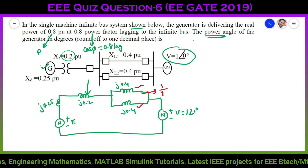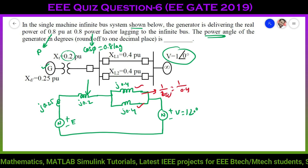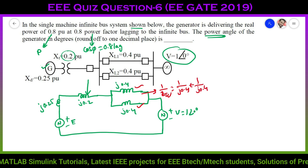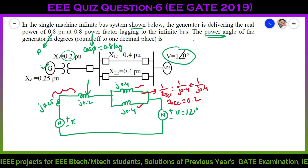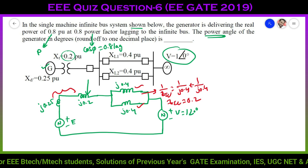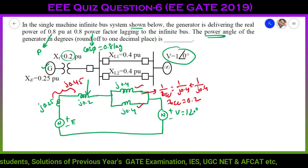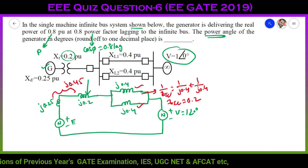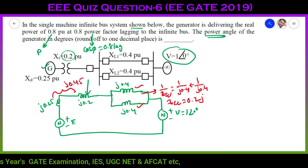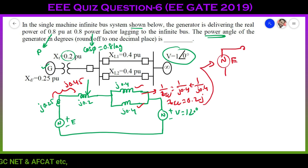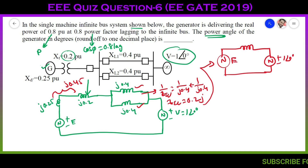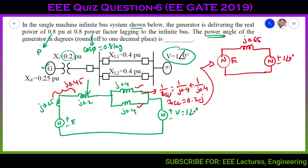The two parallel impedances give Z_equivalent = 1/(1/j0.4 + 1/j0.4) = j0.2. Then j0.25 and j0.2 are in series giving j0.45. This j0.45 and j0.2 equivalent are also in series, so the final equivalent impedance is j0.45 + j0.2 = j0.65.